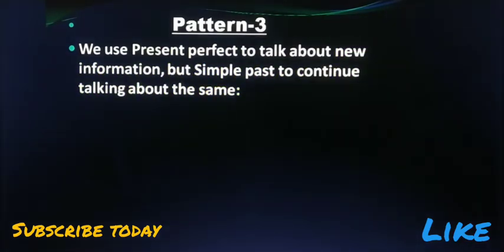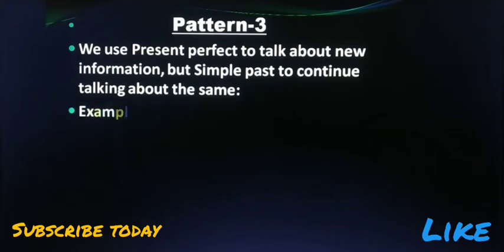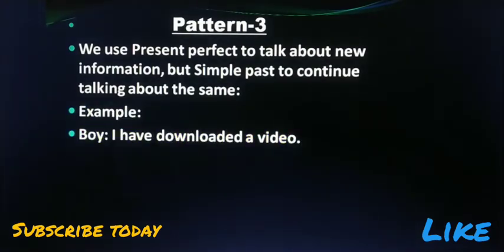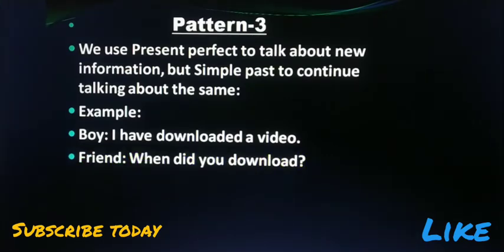Pattern three: we use present perfect to give new information during conversation, but while continuing about the same subject we use simple past tense. Example — a conversation between a boy and his friend. The boy says: 'I have downloaded a video' — it is with him on his smartphone or computer. The friend asks: 'When did you download it?' using past tense because it refers to a finished action.